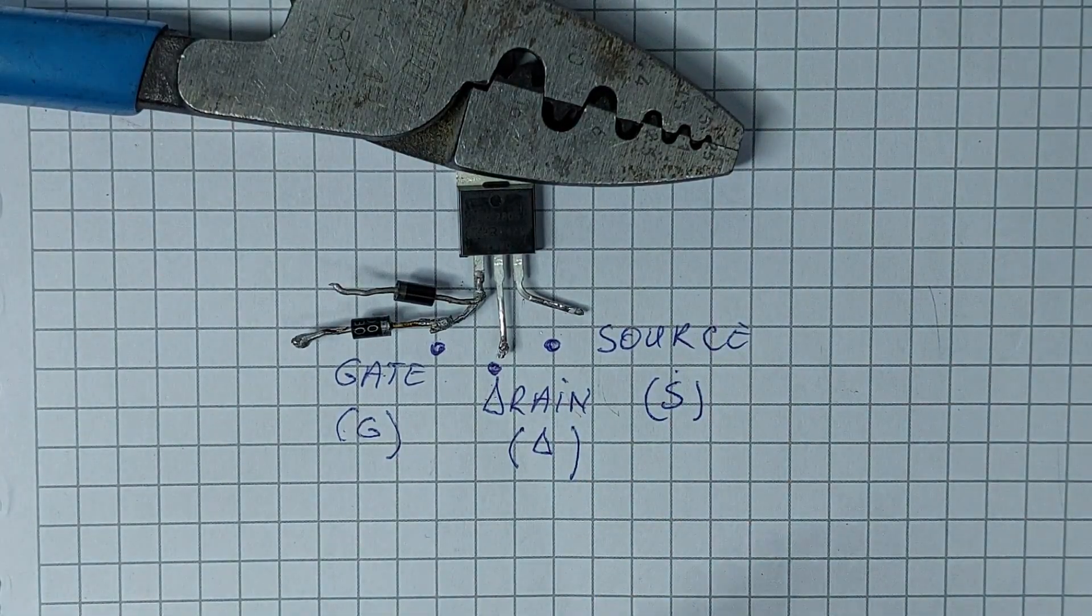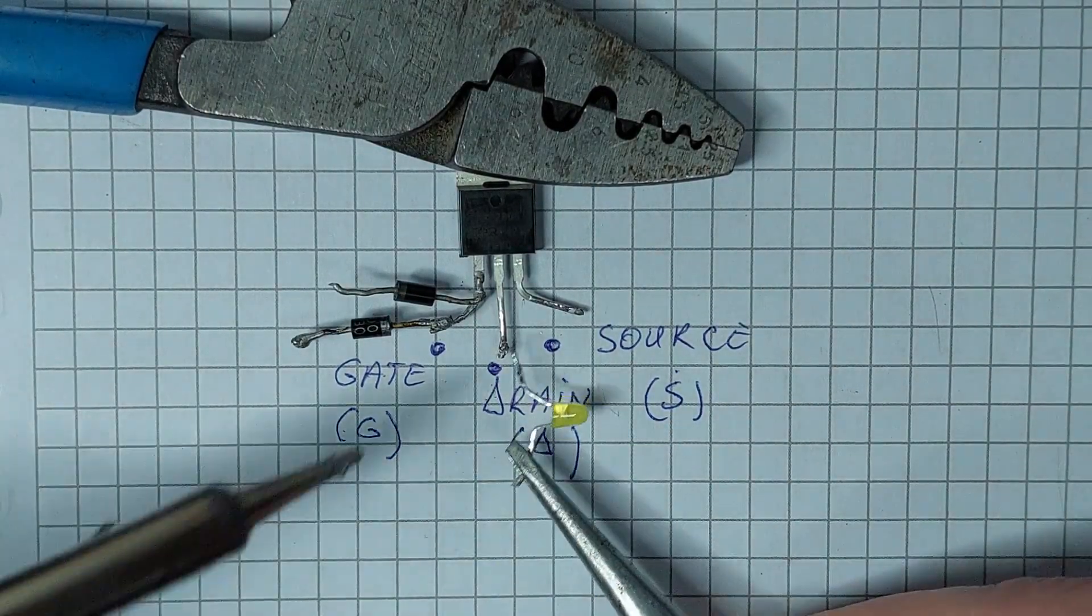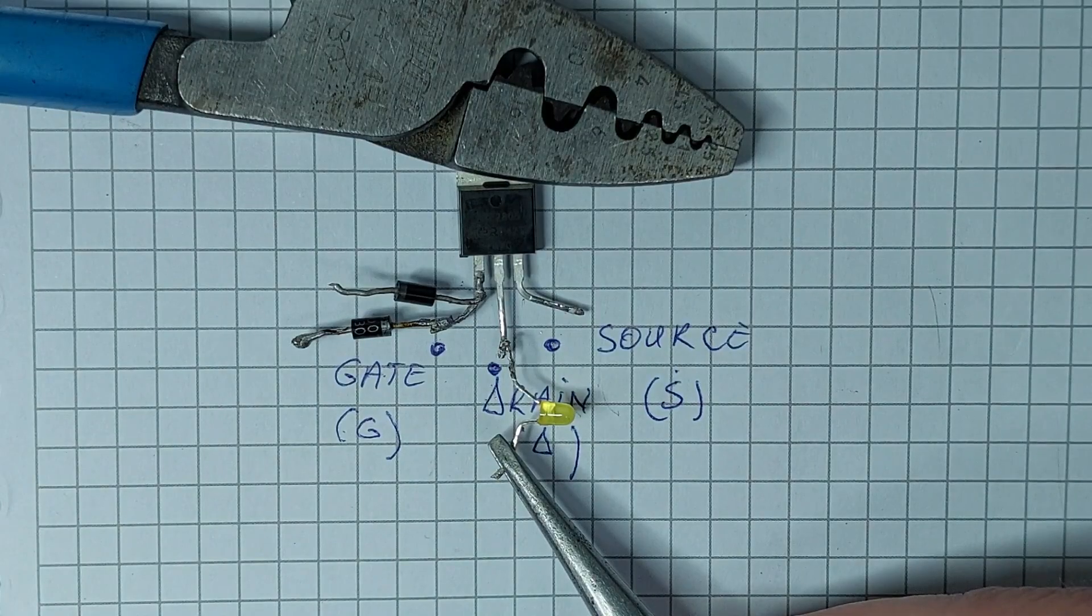Next, I'll connect an LED to the drain pin. This will be the component that lights up or turns off based on the MOSFET switching.